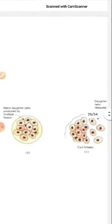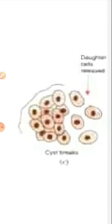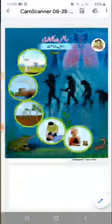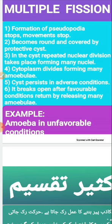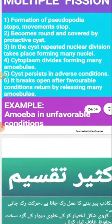Inside the cyst, repeated nuclear division takes place, forming many nuclei. The cytoplasm also divides, forming many amoebulas inside the cyst. When favorable conditions return, the cyst gets ruptured and many daughter amoebulas are released from the cyst. Because many amoebas are produced at once, this is called multiple fission or kasir taqsim.